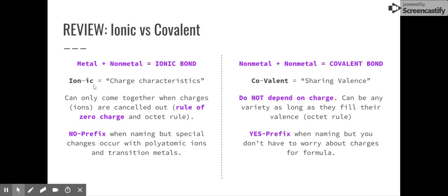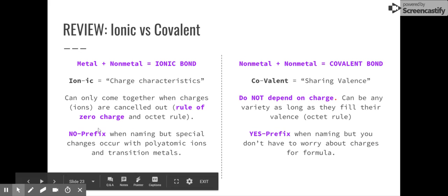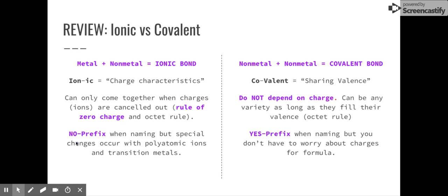Once we know it's an ionic bond, we know that ionic means charge characteristics, so we have to follow that rule of zero charge. Each substance of the ionic compound must come together in a ratio where they cancel each other out charge-wise. Now, ionic compounds do not have prefixes in their name, and so when we name them or look at the name, there are no prefixes to tell us how much they are. We have to base it on charge.